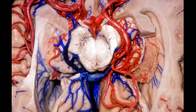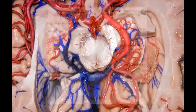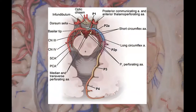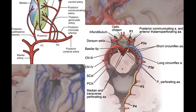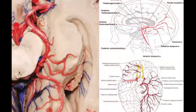Here is the P1 segment, then we have the P2, P3, and P4 segments which supply the cortex. The P1 and P2 segments give off branches supplying the thalamus — we can see P3 and P4 closer here along with their branches to the thalamus and the occipital lobe.